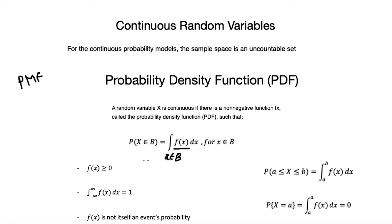The PDF has some key properties: it is always greater than or equal to zero, and its integral from negative infinity to infinity always equals one. The function f(x) itself is not a probability — its integral gives the probability. Note that f(x) can be greater than one. The probability that X lies in interval [a, b] is the integral of f(x) from a to b.